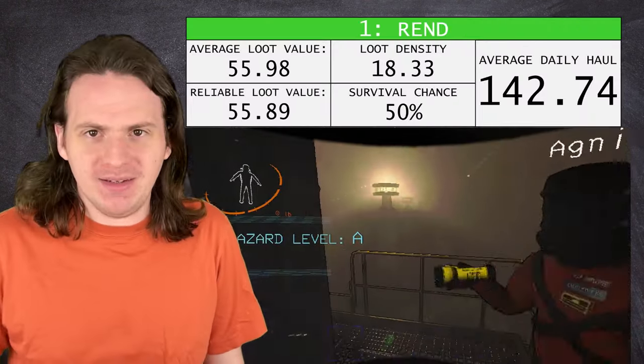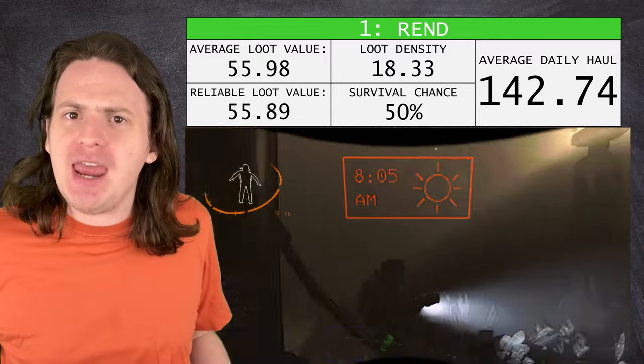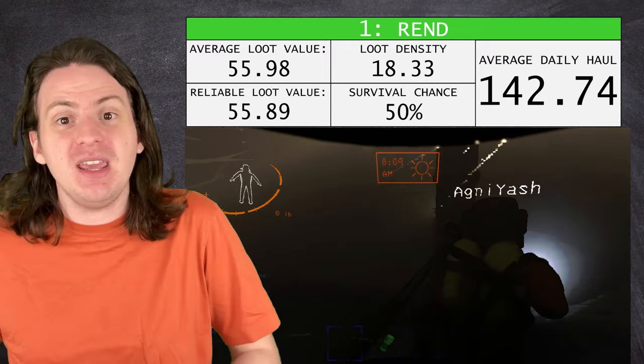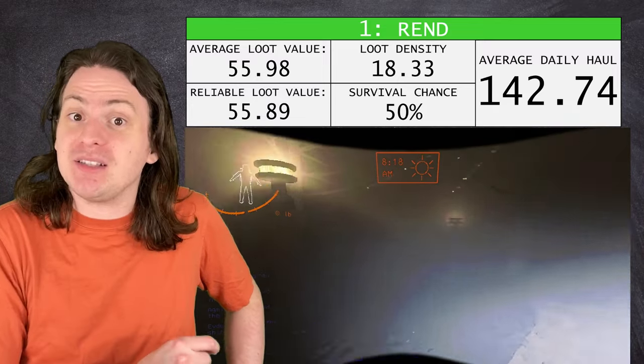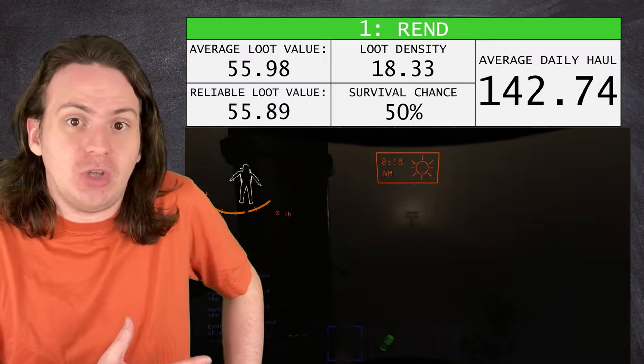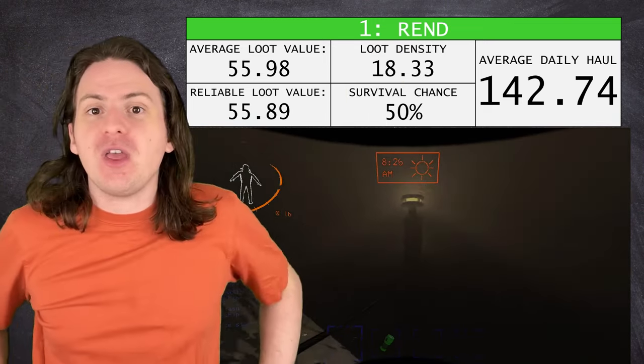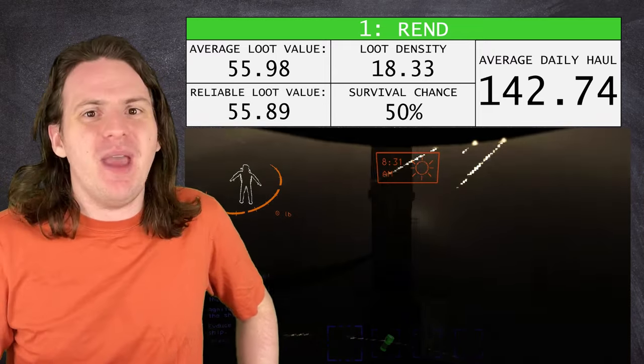And finally, in first place, the statistically best moon in the game is Rend. And honestly, it's not even that close. The loot there is a shade more valuable than the rest. It's one of the most densely packed maps in the game, and according to the game's risk levels at least, it's less dangerous than Dine. Don't know where they're getting that from, they both seem exactly the same to me, but sure. If you're feeling confident in your ability to survive, then Rend is your best bet.